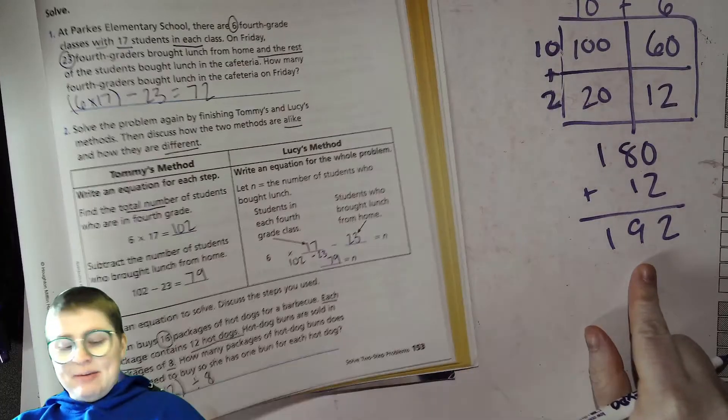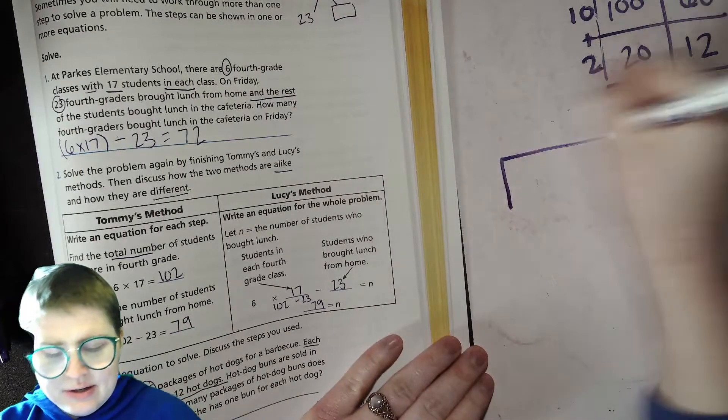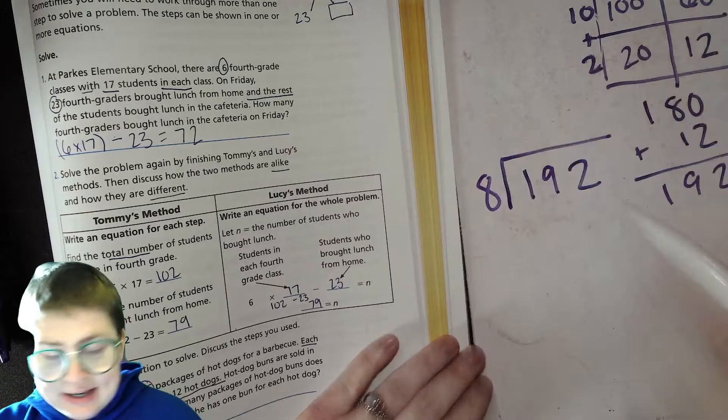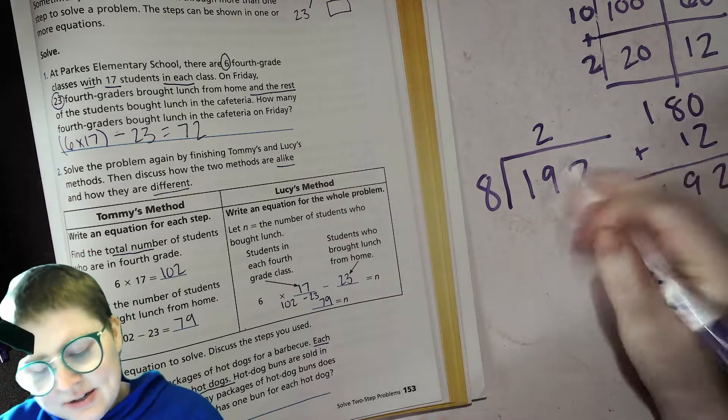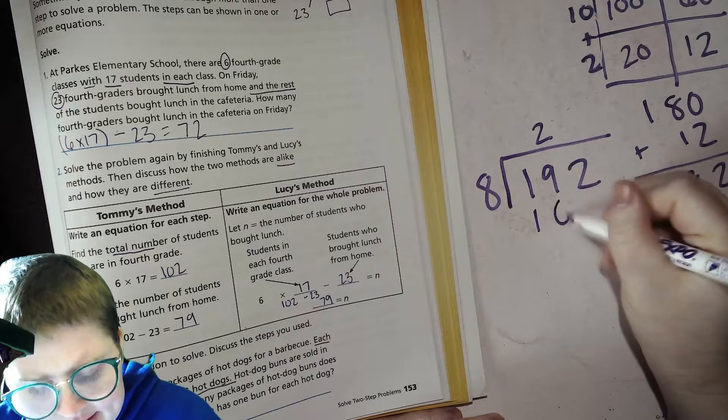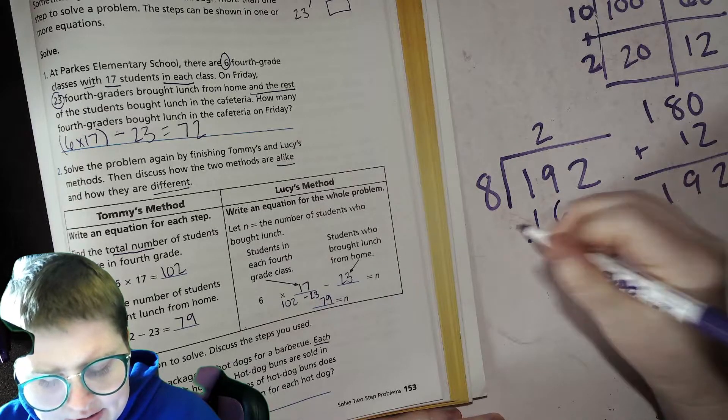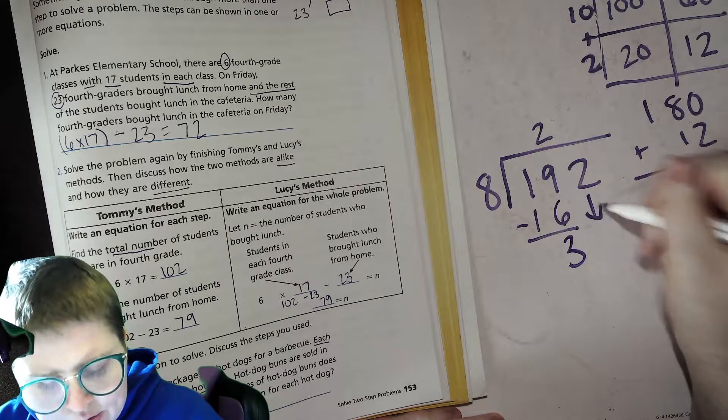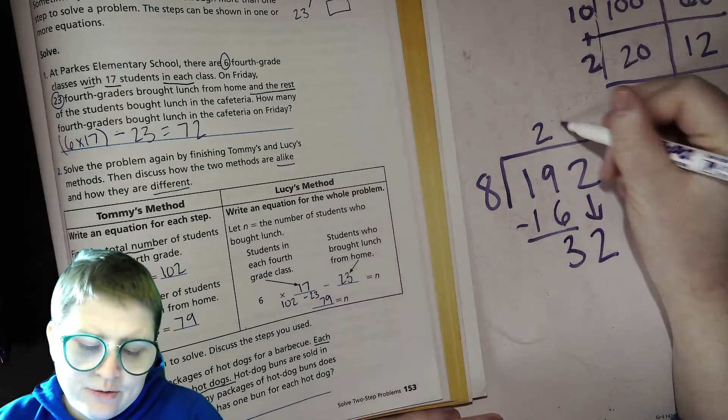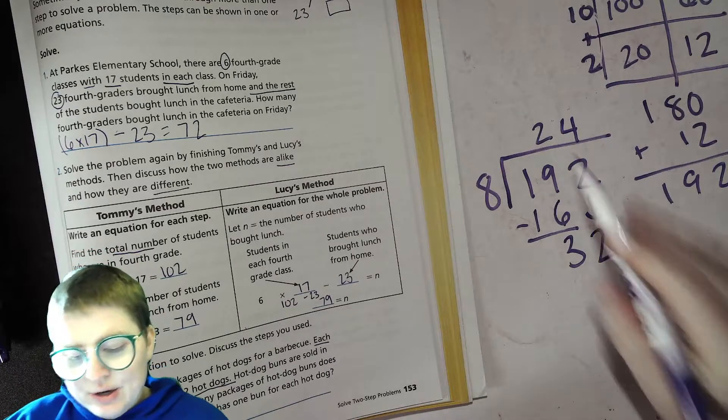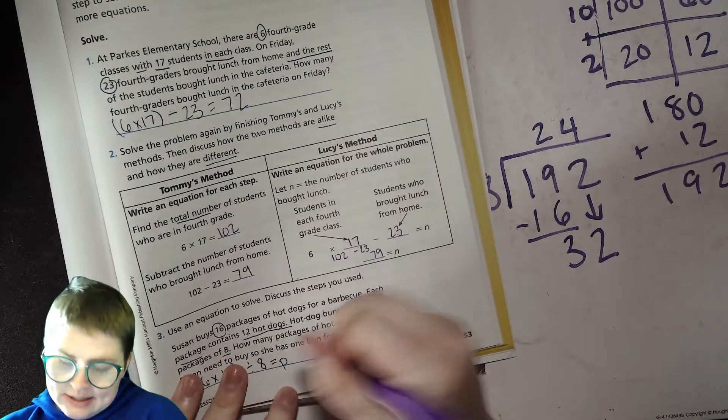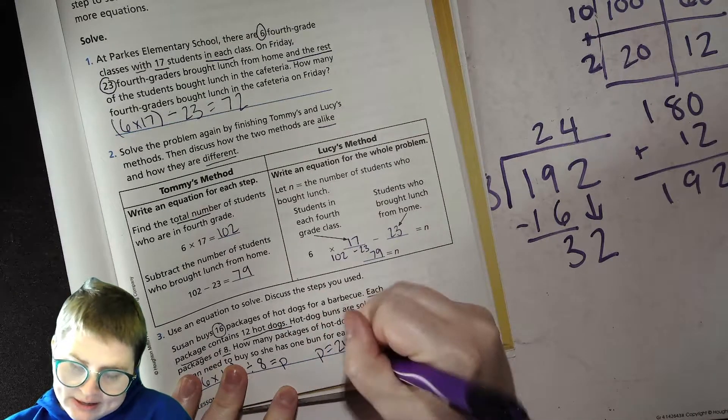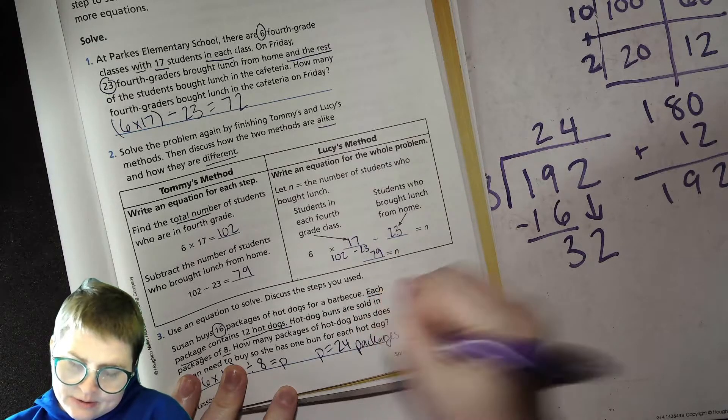Now, that's our first step. We're not done yet. We're going to do that second step, divide by eight. So, 192 divided by eight. Eight can go into 19 two times, and you get 16, and then you get three, bring that two down. Eight goes into 32 four times. So she will need to buy 24 packages of hot dog buns. p for packages, p equals 24 packages of hot dog buns.